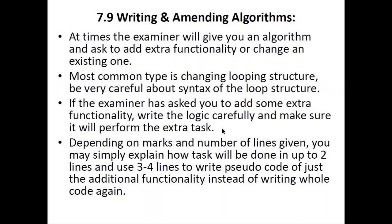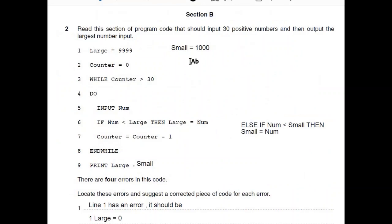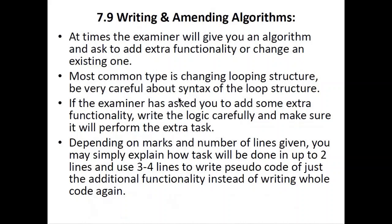Depending on marks and number of lines given, you may simply explain in up to two lines how the tasks would be done, and use three to four lines to write the pseudocode for just the additional functionality instead of writing the whole code again. For example, I would simply explain that we are introducing a new variable small, use an else-if to compare and find the smallest number, and then write just those lines — not the whole algorithm, since we do not have enough marks or time for that. That is all you need to know about section 7.9: Writing and Amending Algorithms.